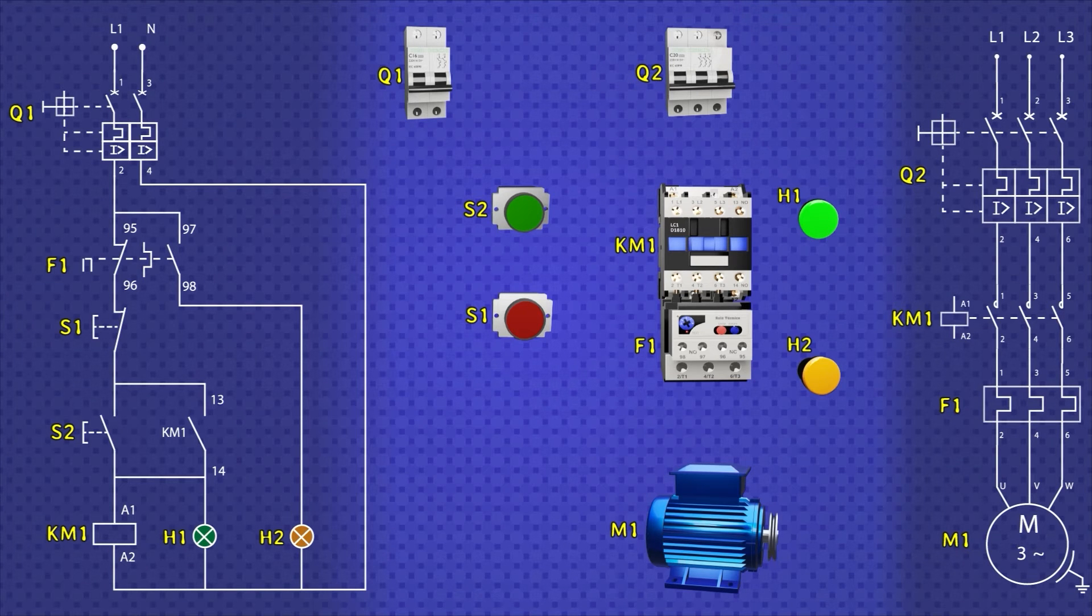For a better understanding, I am going to connect the physical elements guided by the diagrams previously explained. The connection of the power scheme is relatively easy since the three-phase power supply is carried through the thermomagnetic switch, then to the contactor and thermal relay, and finally to the motor. It's just that.